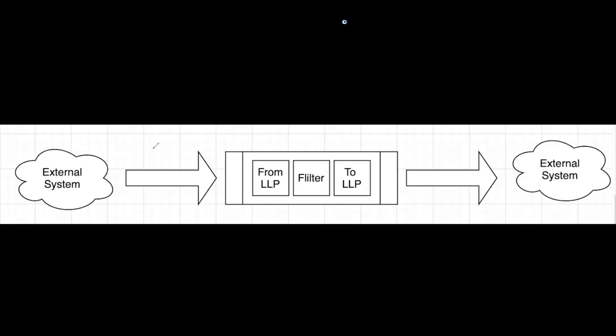Let's first look at a common architecture that customers typically use on their Iguana instance. This architecture is pretty simple — essentially you have an external system that sends messages over TCP/IP to your Iguana channel, which is set up as a from-LLP to LLP component with a filter in between. Once the message has been filtered, it will then send the message over LLP to your external system. The first way to resubmit messages is going inside your Iguana instance and clicking on individual messages received from the source system and resubmitting via the resubmit message option.